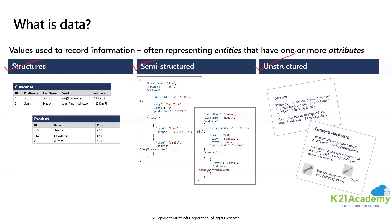So every entity — each of these is one entity. Let's say this is the customer entity; in this case I have the product entity. Every entity that you are creating, which is basically a storage of your data — it could be sales, customer, or products which we see right now on the screen — is a collection of attributes. When I say customer, it is customer ID, customer name, first name, last name, email, address, etc.